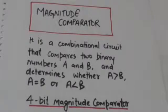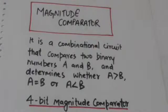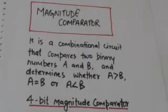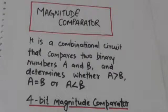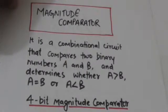Hello friends, welcome back. In this tutorial we will study about magnitude comparator. It is a combinational circuit that compares two binary numbers A and B, and it determines whether A is greater than B, A equals B, or A is less than B.